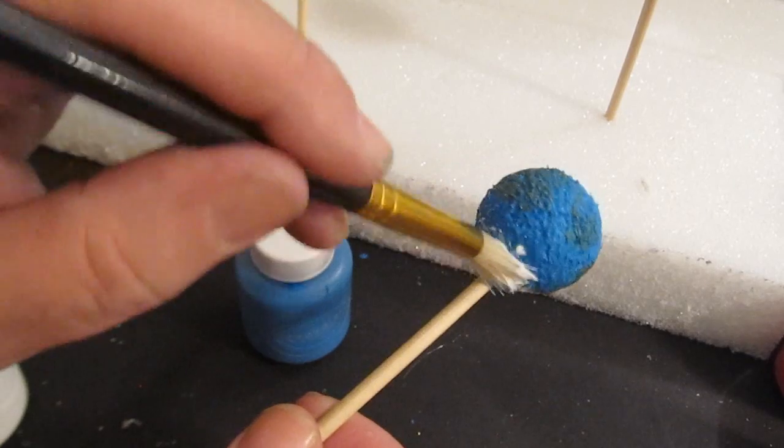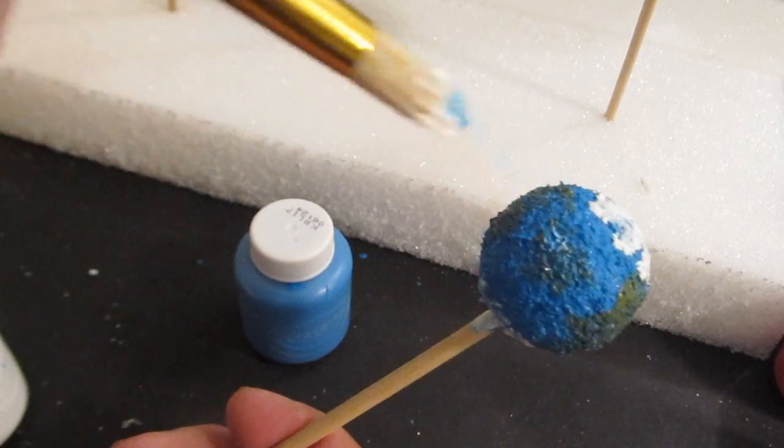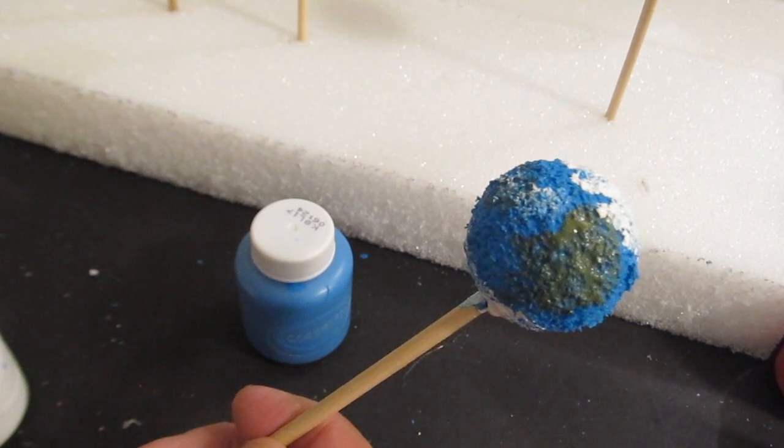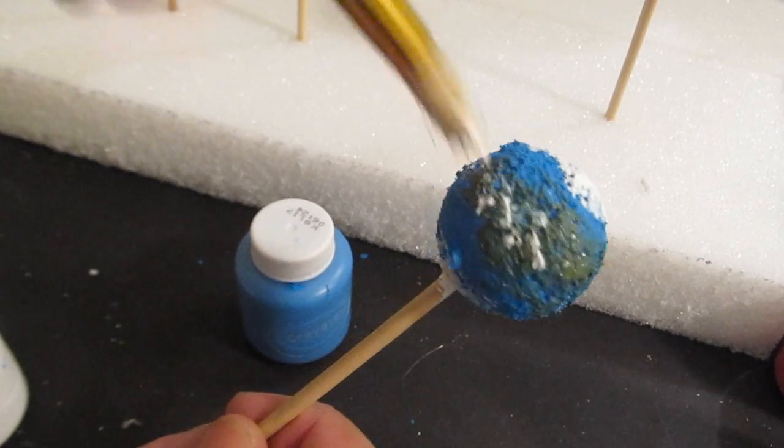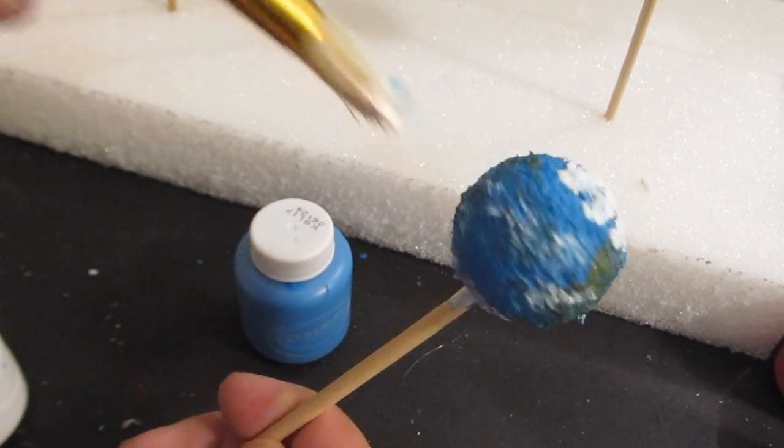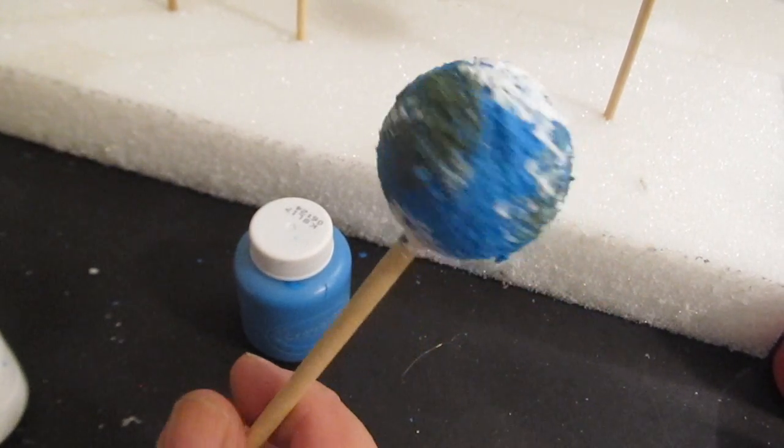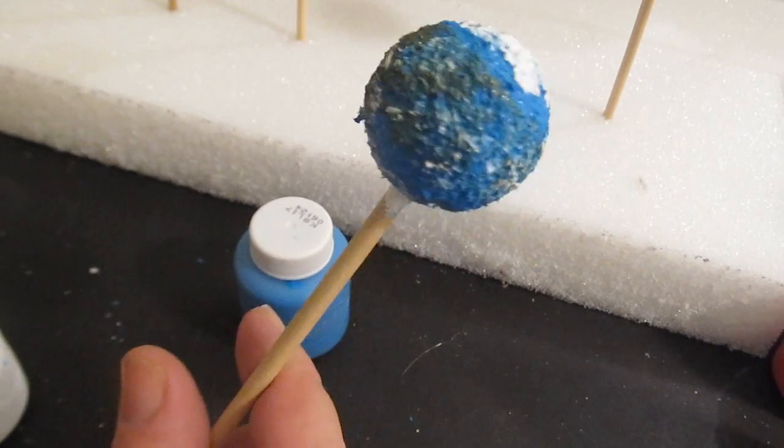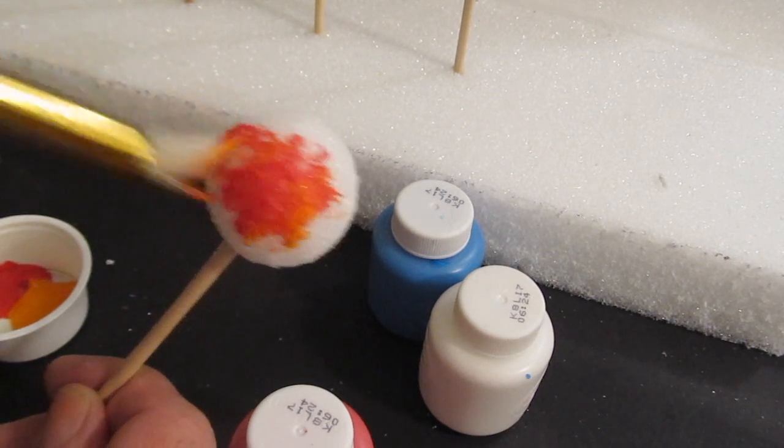And this next step is critical. A lot of people don't think of this. But the Earth has an awful lot of clouds and they show from space. You can see them. So dab on some clouds all over the planet. Over the oceans, over the continents. See that? That makes all the difference in the world. And we have our little lollipop Earth. It's fun. Are you enjoying the project? Are you making the project right now? If you are, send me a comment.